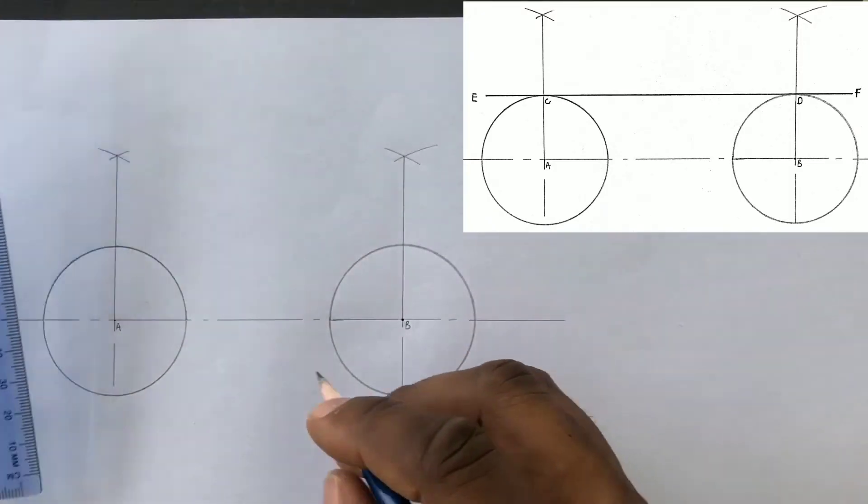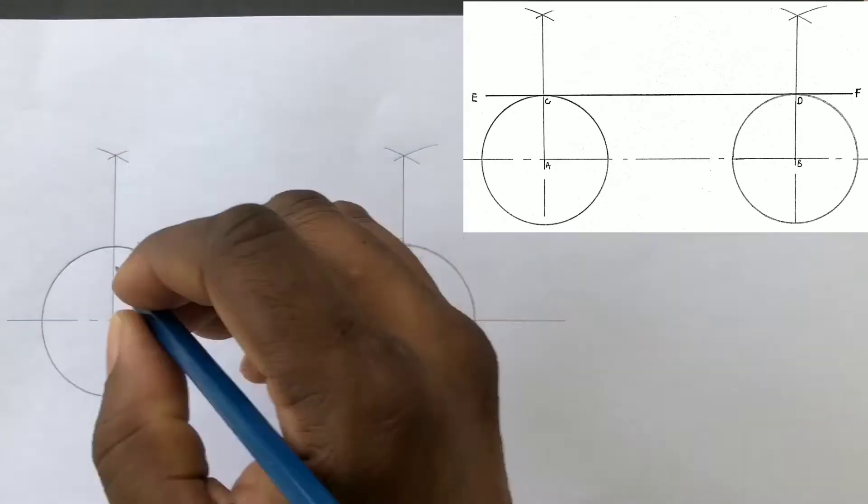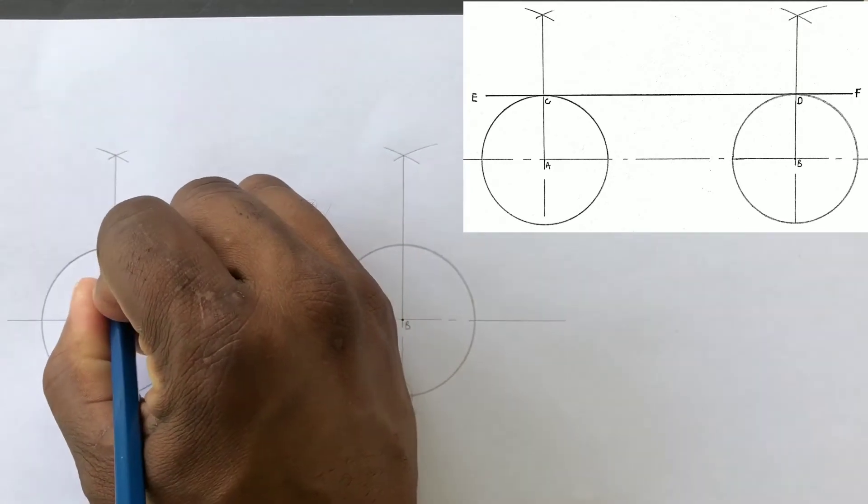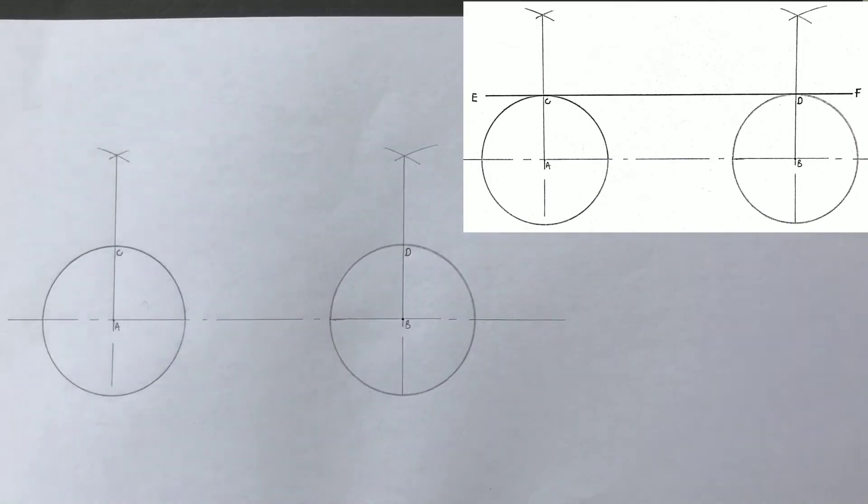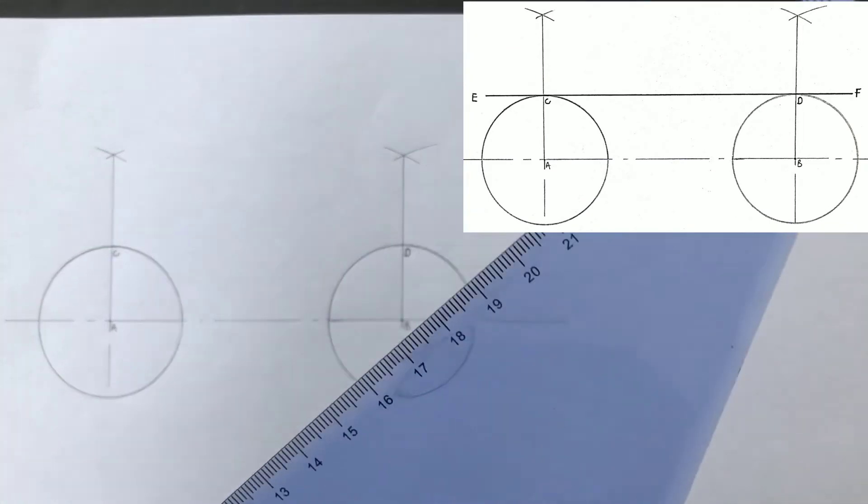The vertical line we just drew gave us point C and point D. Always remember to label your important points.